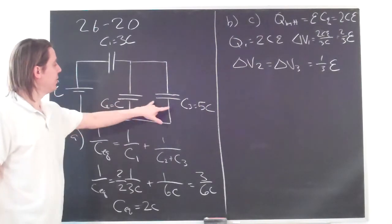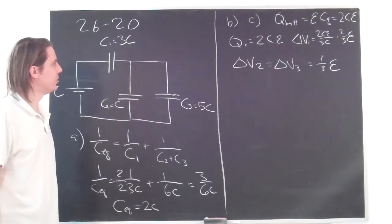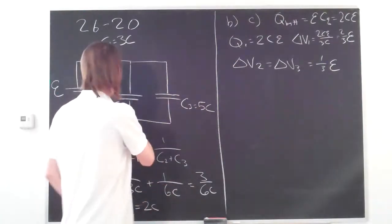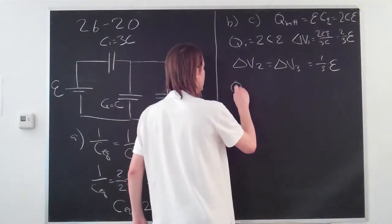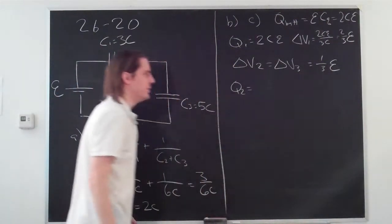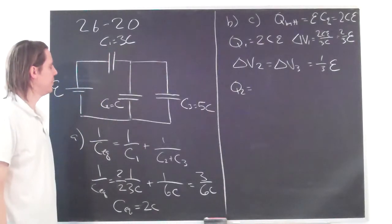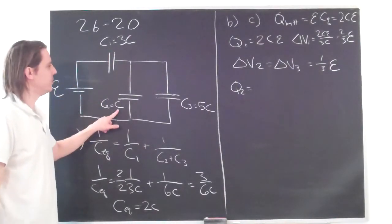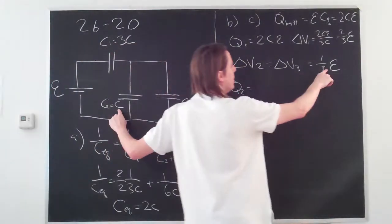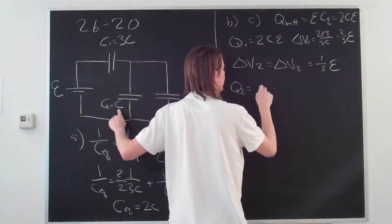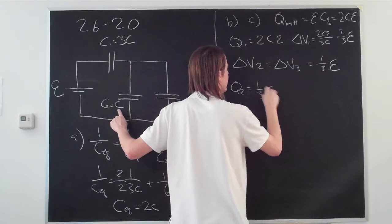Alright? And if we know those delta Vs, then we also know the capacitances. Q, let's see, it'll say Q2 is just C times V. Alright, so the C for Q2 is C, and the V, the delta V is one-third E, so it's just one-third CE.